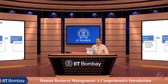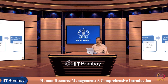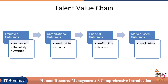Competency leads to organizational outcomes in the form of productivity and quality of the outcome. If organization productivity and quality of output are there, naturally that will result in positive financial outcomes like profitability or enhanced revenues. Financial outcomes are then reflected in market-based outcomes — for example, stock price is one market-based outcome, but there can be multiple others like brand equity and brand recall.